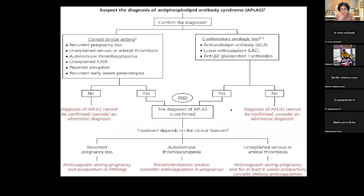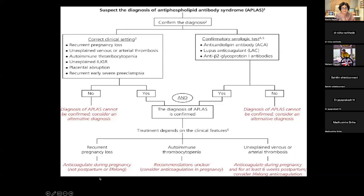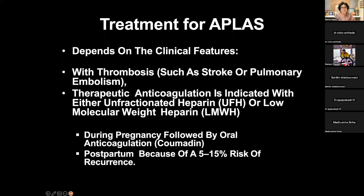Treatment of confirmed APS depends on clinical features. For recurrent pregnancy loss: anticoagulant therapy during pregnancy, no postpartum or lifelong therapy needed unless indicated. For autoimmune thrombocytopenia: recommendation is unclear — consider anticoagulation therapy in pregnancy. For unexplained venous or arterial thrombosis: anticoagulant therapy during pregnancy and six weeks postpartum, with consideration of lifelong therapy.